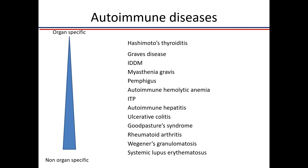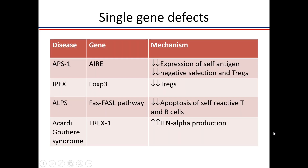We have many autoimmune diseases that are organ-specific — like Hashimoto's thyroiditis, Graves' disease, myasthenia gravis, autoimmune hemolytic anemia — and non-organ-specific systemic diseases like lupus, vasculitis, and rheumatoid arthritis. Looking at genetic defects: if there is a defect in the AIRE gene, you get APS1 because there is less expression of self-antigen by medullary thymic epithelial cells, so negative selection doesn't occur — autoreactive T cells are not deleted and Tregs are not generated.